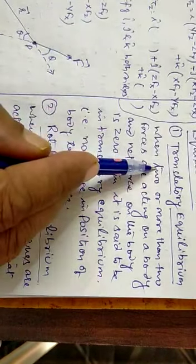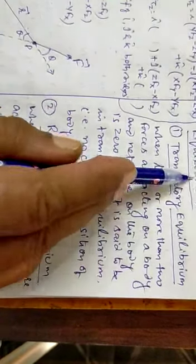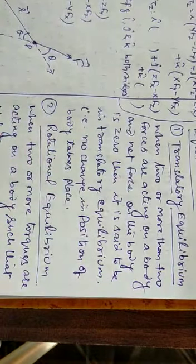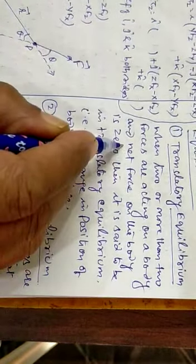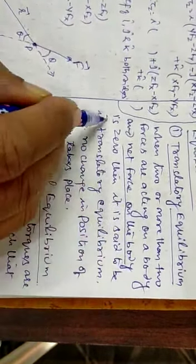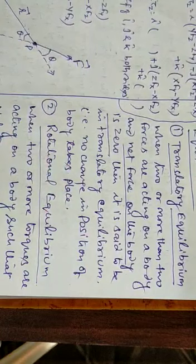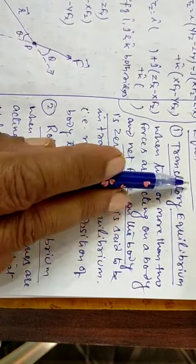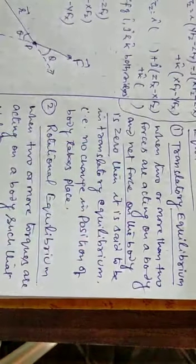There is no change in the position of the body. It doesn't move. That's when the net force is zero. It doesn't mean that the body is not moving in translatory equilibrium — it means there is no change in position.